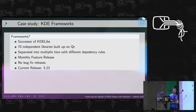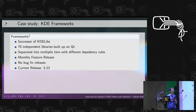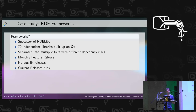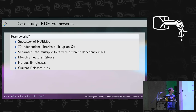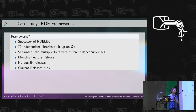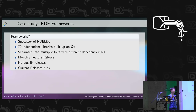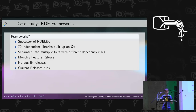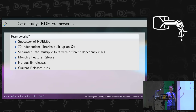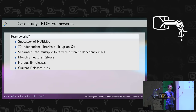Let's start with our quality assurance process. First, looking at KDE Frameworks — the successor of the monolithic KDE libraries from KDE 4 times, nowadays 70 independent libraries built on Qt. We've separated them into multiple tiers with different dependency rules: tier one depends only on Qt, tier two depends on Qt and tier one frameworks, and tier three can also depend on other tier three frameworks, but no circular dependencies are allowed. We're at a monthly feature release cycle with no dedicated bug fix releases, currently at release 5.23 — meaning we've been doing monthly releases for two years.